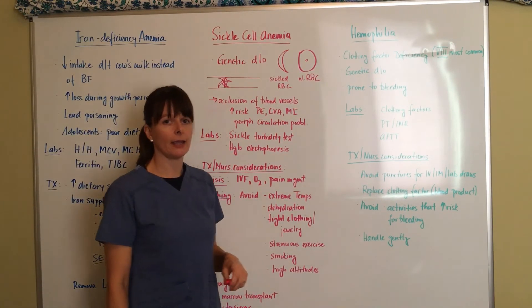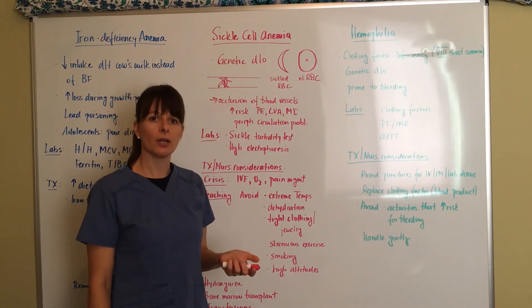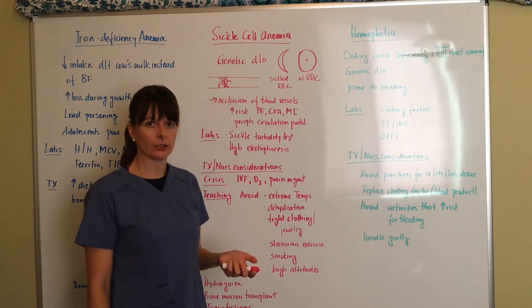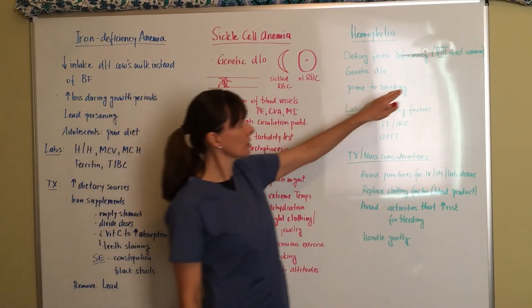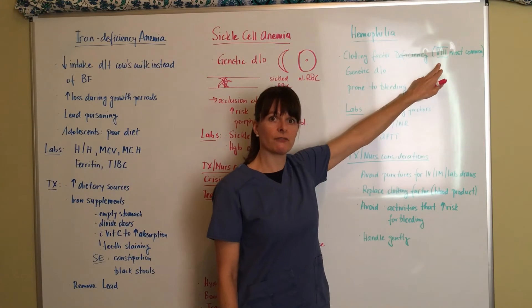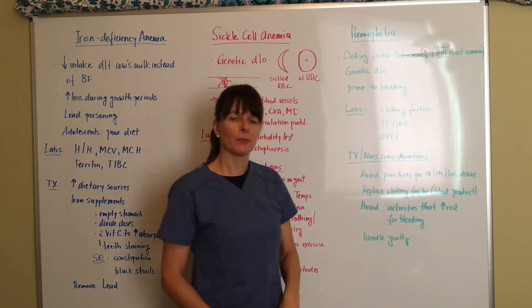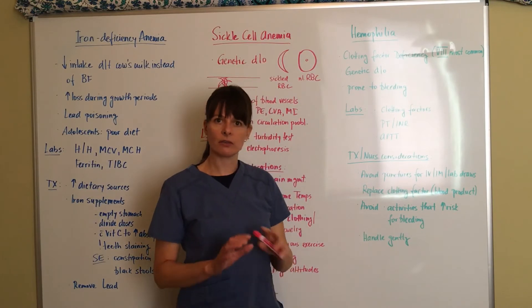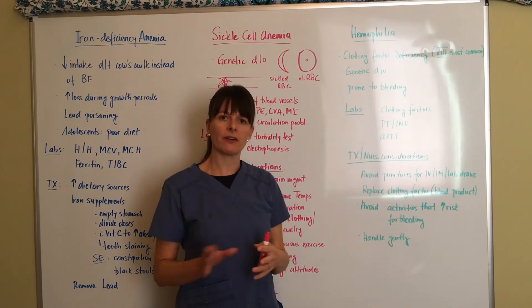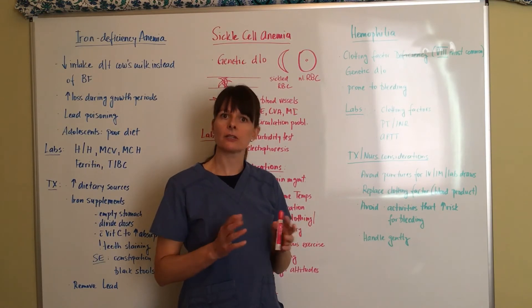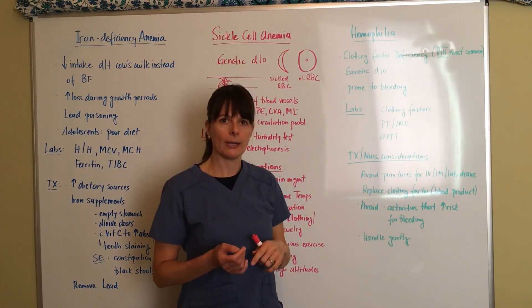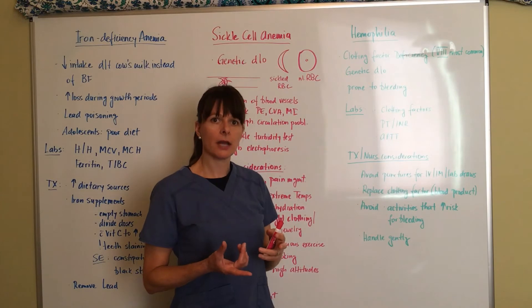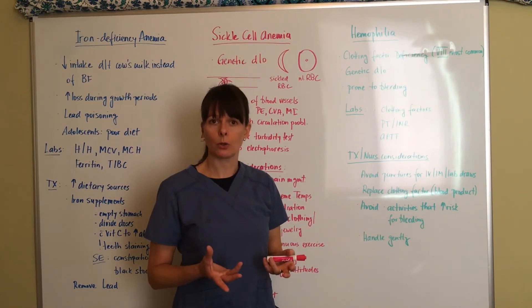Now if we move on to hemophilia, hemophilia is a disorder that affects the clotting factors and the most common clotting factor deficiency is factor eight. Remember from your pathophysiology background that there's several different clotting factors that help in the coagulation cascade, the intrinsic and extrinsic pathway. When we're missing these clotting factors, we're prone to bleeding.